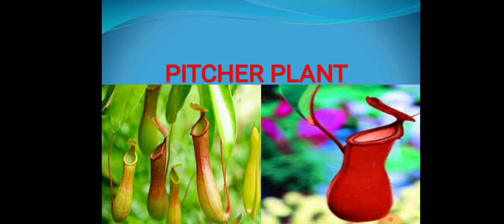It has a pitcher-like shape — picture means pot. Can you see? It has a pot-like shape and the mouth is covered by a leaf, which is like a lid of the pot. The plant has a special smell that attracts insects to it. When the insects land on the mouth of the plant, they get trapped and cannot get out. Then they fall into the pitcher and are digested by the plant, giving it its nutrition.